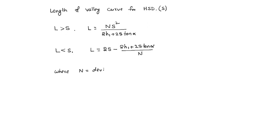Deviation angle equals the modulus of G₁ minus G₂. For example, if a 3% down gradient meets a 2% up gradient, then N equals modulus of down gradient, which is -0.03, minus the up gradient, which is positive 0.02.